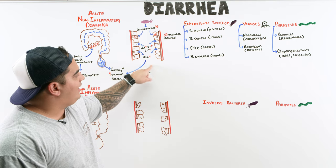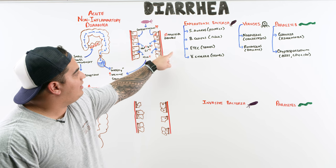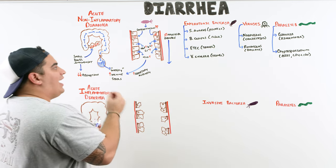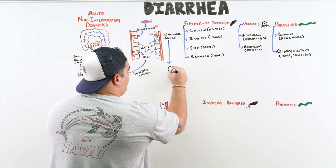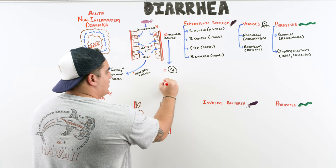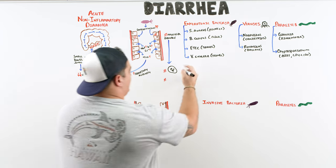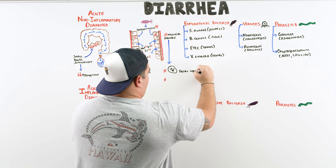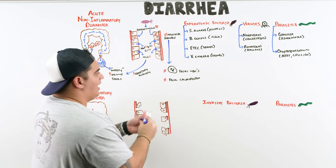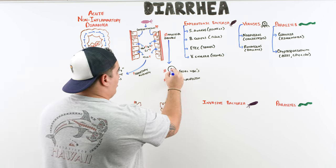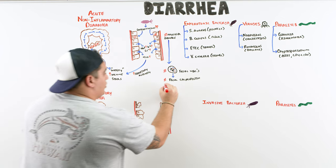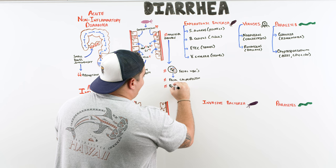An important diagnostic point: since there's no mucosal damage in acute non-inflammatory diarrhea, there are no fecal white blood cells and no fecal calprotectin — the chemical those WBCs would release. Additionally, since the mucosal barrier isn't broken, there should be no blood in the stool.